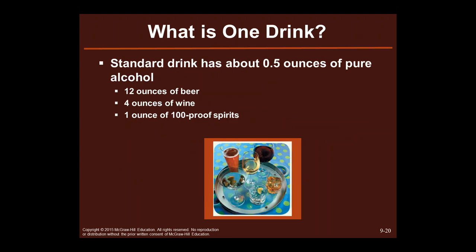What is one drink? One drink is about 0.5 ounces of pure alcohol, which is 12 ounces of beer, four ounces of wine, or one ounce of 100 proof spirits. A shot glass is about 1.5 ounces. Four ounces of wine is maybe less than you think — so when people say one glass of red wine is good for you, that means four ounces, not your giant wine glass.